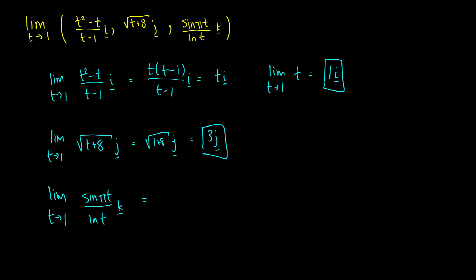So what we get on the top, the limit as t approaches one: sine pi t is going to be cosine pi times t. That's the derivative of sine t. But then we're also taking the derivative of the inside of pi t, so we're going to multiply this by pi. And then on the bottom, the derivative of ln t is going to be one divided by t.